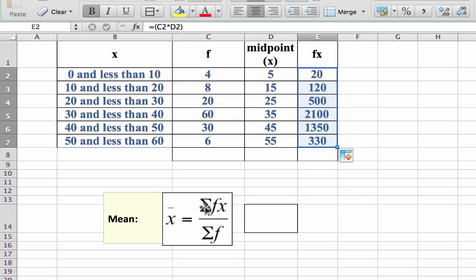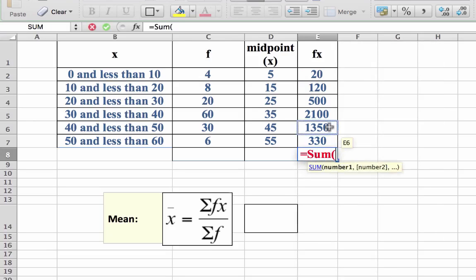So finally, to get the numerator, we just sum it up. So equals sum, open your bracket, click on the beginning number you want to add up, put in colon and the last figure, close your bracket and return and we have our sum of fx.